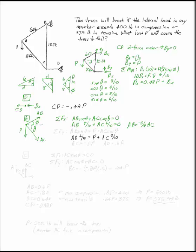The sum of the forces in Y tells me AB sine phi equals P plus AC sine theta. AC is equal to negative 0.8P. AB is equal to 0.6P.